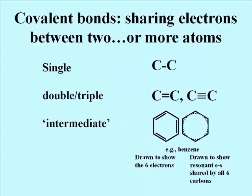Covalent bonds are represented by the dash between the atoms. Each bond represents a pair of electrons shared by the two atoms. Two atoms can share more than one pair of electrons. Single and double bonds are common enough, and you may have seen some examples of molecules with triple bonds, such as hydrogen cyanide. Intermediate covalent bonds occur especially in carbon ring structures.